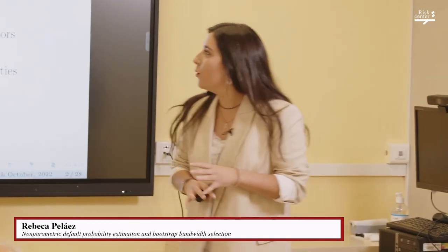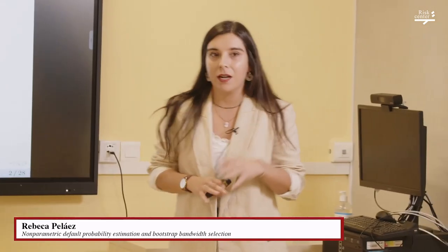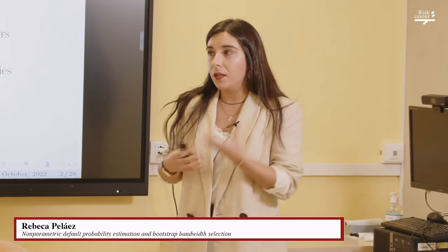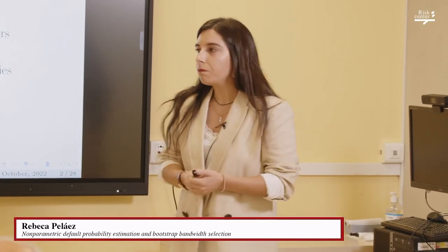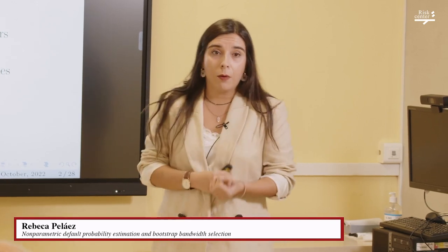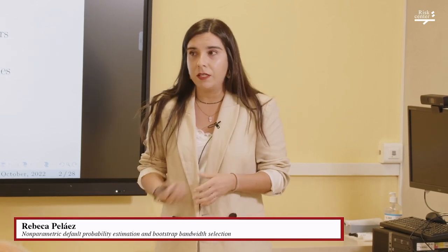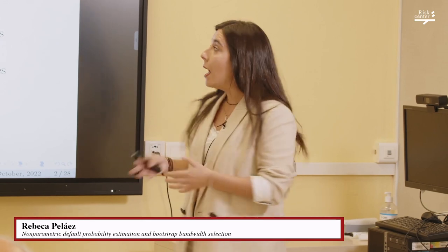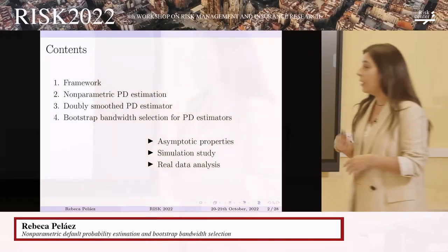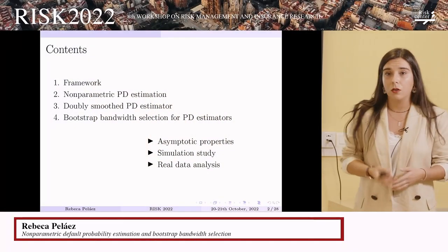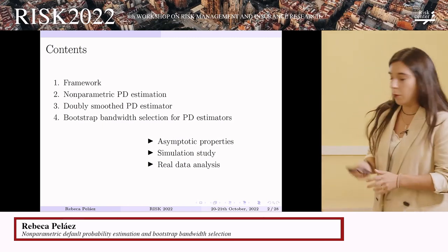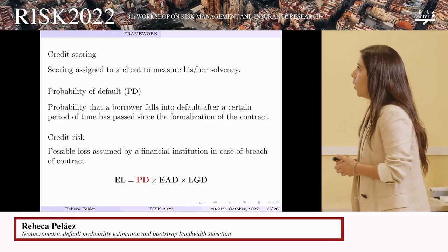This is the scheme I am going to follow: I will start talking about the context where interest in the probability of default appears, then present the non-parametric probability of default estimator we have proposed and a smooth version of it, and then talk about the bootstrap bandwidth selector we have proposed.